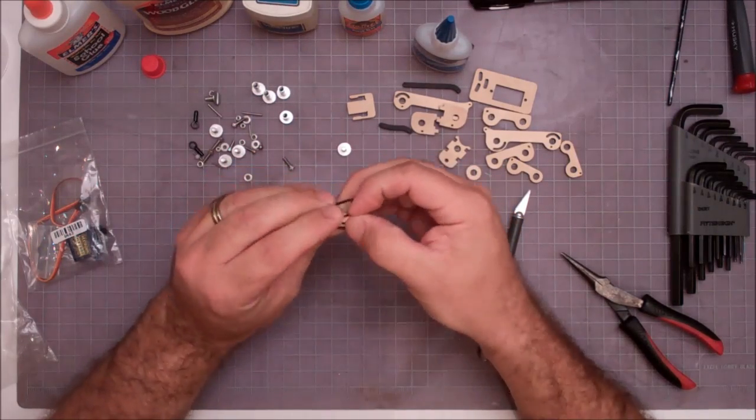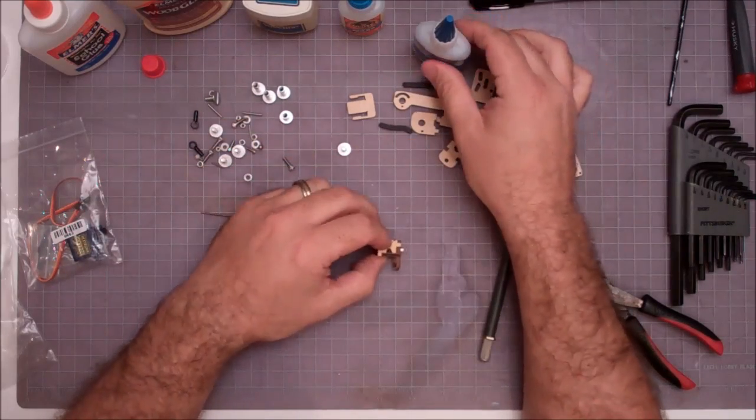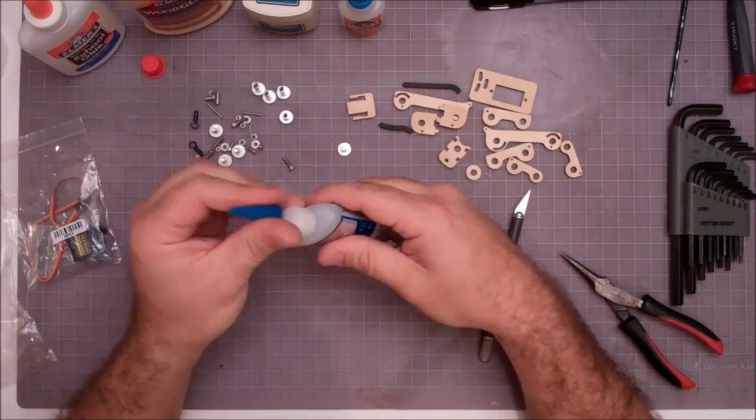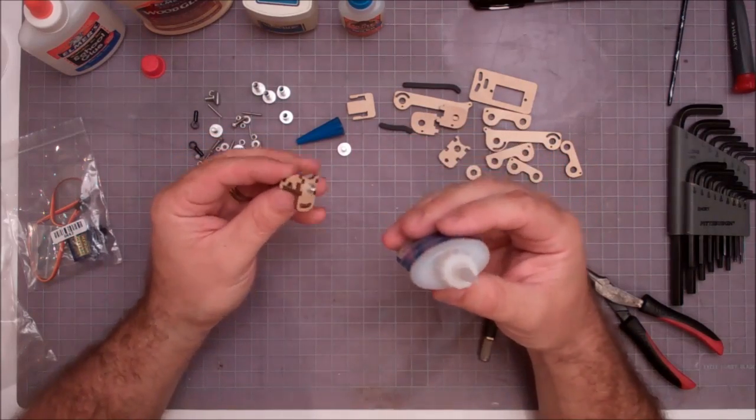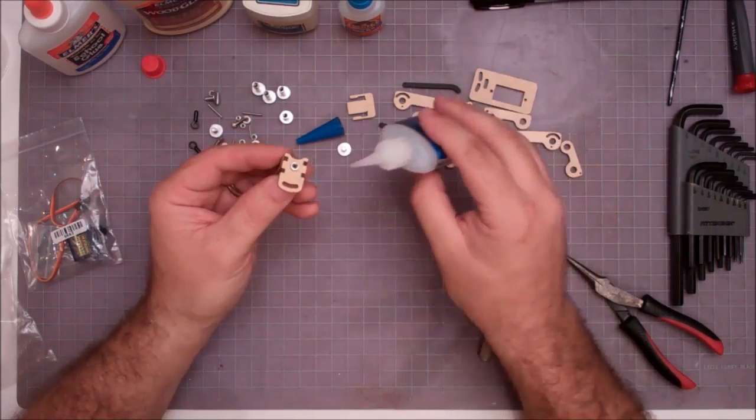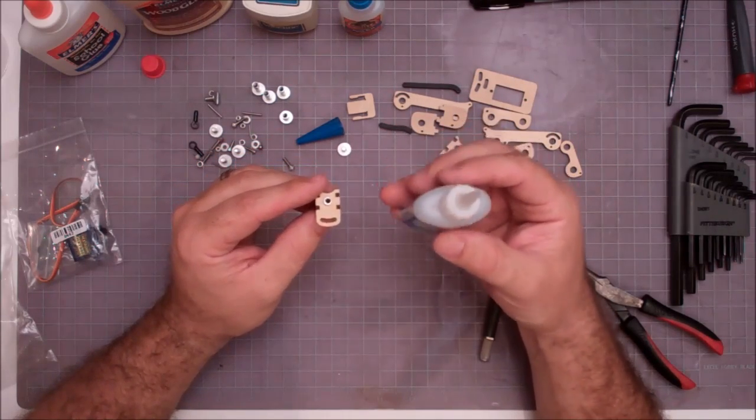So once we've got all these parts squeezed together and we're happy how everything fits and it's tight and well assembled, we're going to go ahead and get our superglue. Open it up. Now, you need to be really careful with this stuff. It is extremely thin and if you just flip the bottle over, it'll actually shoot out. It is a water thin superglue and it goes everywhere.